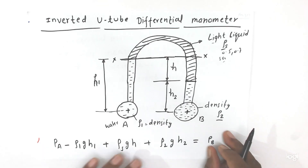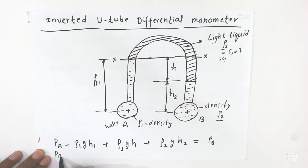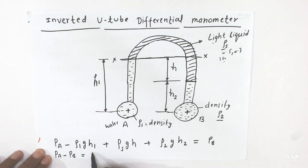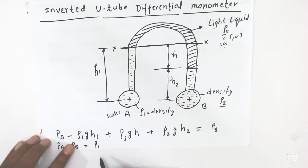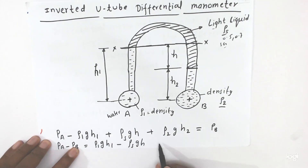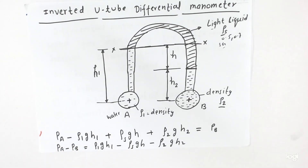So from here, Pa minus Pb is equal to: we take this term to one side and the whole other term to the other side. So Pa minus Pb equals rho 1 · g · h1 minus rho s · g · h minus rho 2 · g · h2. From here we can measure the pressure difference.